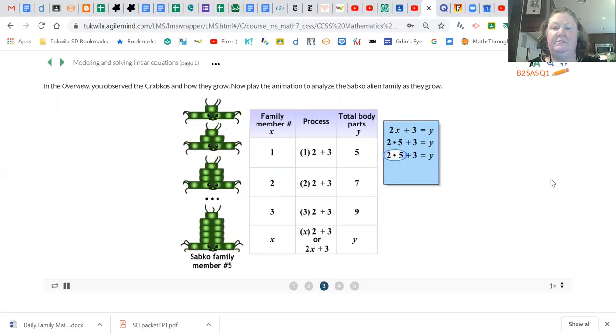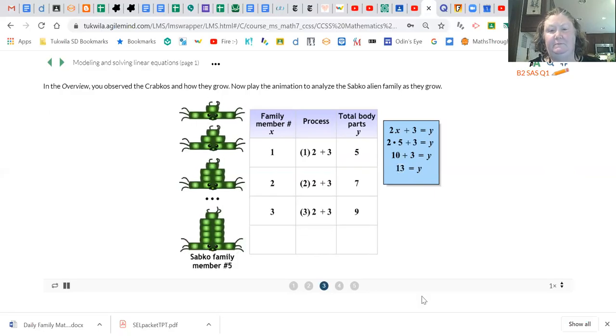So this is family member five. We're going to put a five in for the x, and see two times five is ten plus three gets us 13, and 13 equals y.